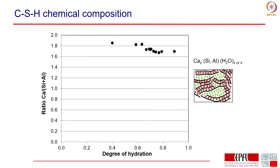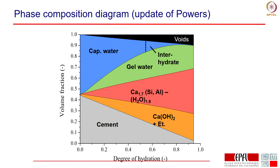We can put all this information together to update the Powers diagram. Powers made a diagram of volume ratios of all different materials as a function of degree of hydration, making very precise measurements on mature samples which agree extremely well with our final volumes. However, Powers lumped all hydrates together; now we can distinguish between different hydrates using NMR or x-ray diffraction. Also, because gel pores form earlier, the boundary between gel and capillary porosity is actually curved, not a straight line as in the original Powers diagram.